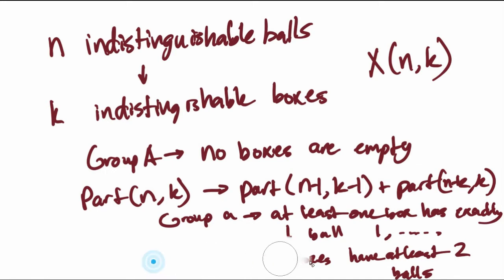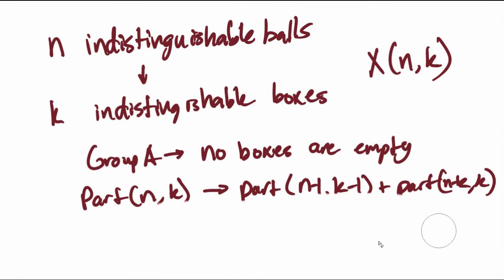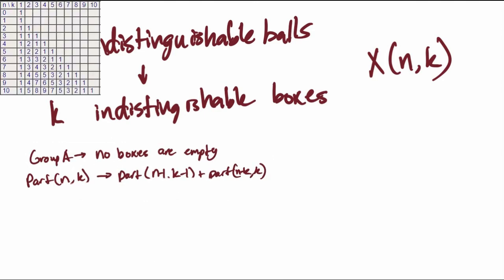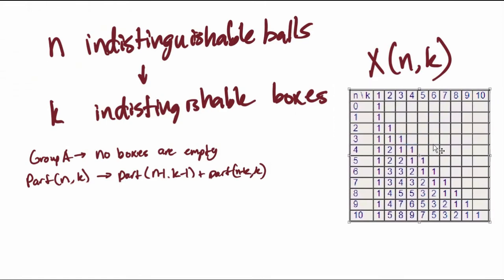So we have that useful equation. There really isn't an easy way to simplify this into a closed formula, so we have to just bash it out. I have a table here of partitions — rows indexed by n and columns by k. For example, the number of ways to partition 9 indistinguishable balls into 2 non-empty indistinguishable boxes is 4. We have this useful partition table to work with.